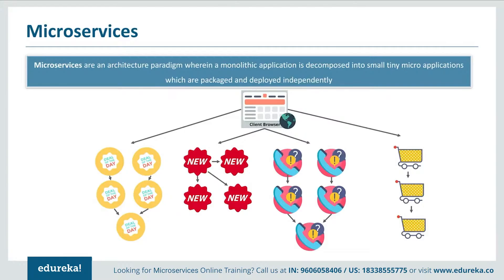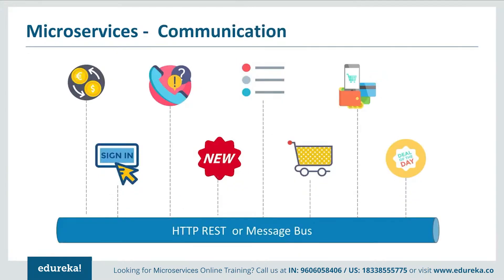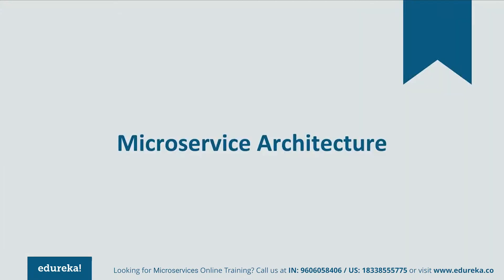Consider the shopping cart application again. Imagine the developers have shifted its framework from monolithic to microservice architecture. As a user, you still see features together on a single website, but now there are separate teams handling different features. There's a team handling 'deal of the day,' a team handling new labels, a team handling customer services, and so on. All teams write code for their own features only, making it easy to deploy individual features again and again whenever required. These separate individual deployable units communicate with each other through a well-defined interface of REST or a message bus.